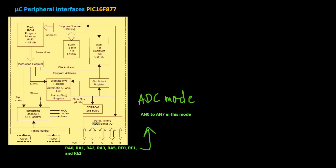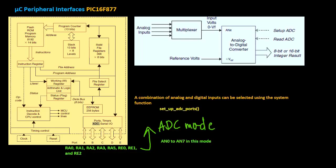These pins are renamed AN0 to AN7 in ADC mode. All these pins default to analog operation, but a combination of analog and digital inputs can be selected using the system function setup_adc_ports. These inputs are multiplexed into a single converter, so they can be read only one at a time.